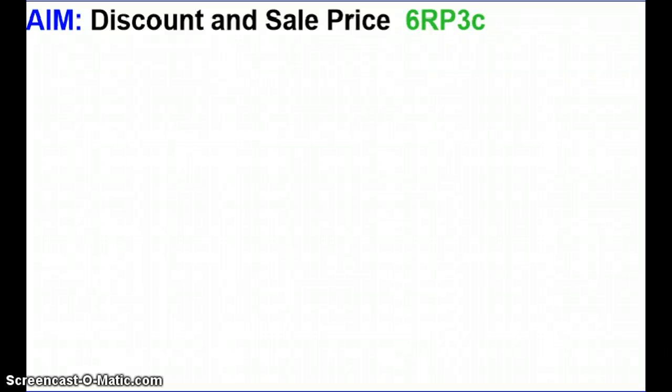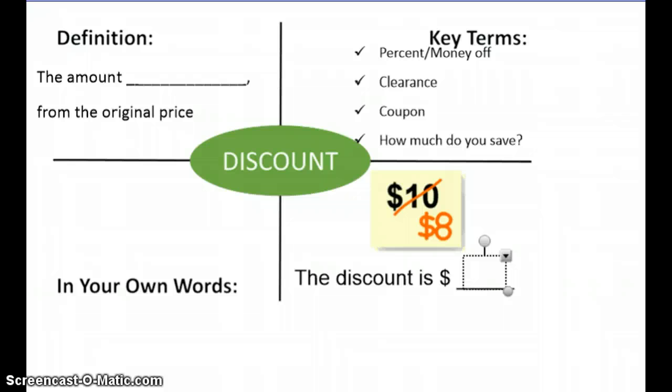Hi guys, so today's aim or topic will be discounts and sale price, which relates to standard 6.RP.3C. Last night you were given the foldable for the discount and sale. Inside the first flap for discounts you will see this picture on the left hand side. We're going to fill in the missing pieces at home.